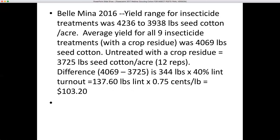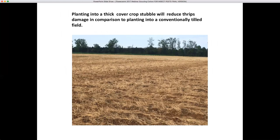Last year at Belvina we had fairly decent thrips damage in our research plots. The yield range for insecticide treatments was about 4,200 to 4,000 pounds of seed cotton per acre. There were nine insecticide treatments — some foliar, some seed treatments, some a combination of both — all with a cover crop residue which tends to reduce thrips damage. The average across all nine insecticide treatments (36 plots) was just over 4,000 pounds of seed cotton. The 12 untreated plots averaged 3,725 pounds, with the net economic benefit of seed treatments being about $100 per acre minus the cost of the seed treatment. Planting into a thick cover crop stubble will also reduce thrips damage compared to a conventionally tilled field.